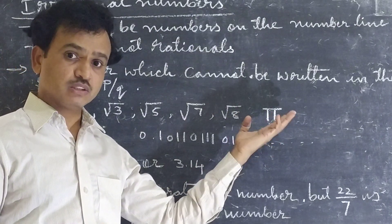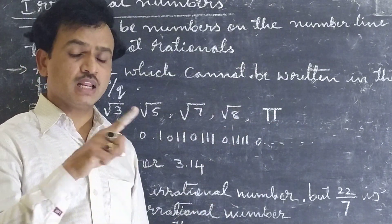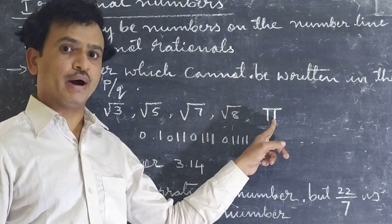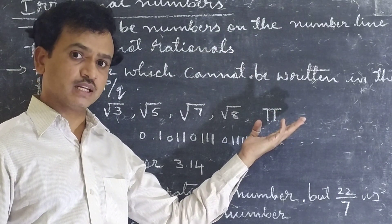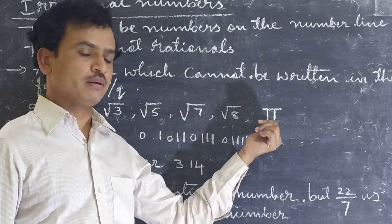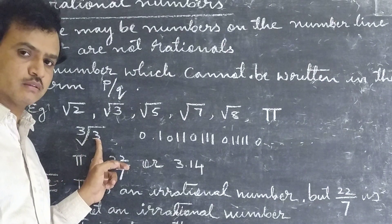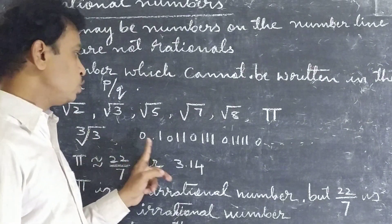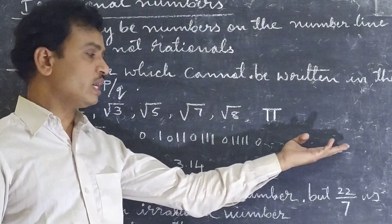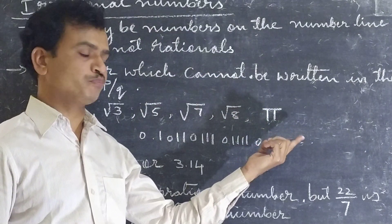Next, pi — this is also irrational. Pi is the circumference of a circle divided by the diameter of that circle. Cube root of 3 is also an irrational number. Also, a number like 0.10110111011110... written in a non-terminating, non-repeating decimal pattern is also an irrational number.